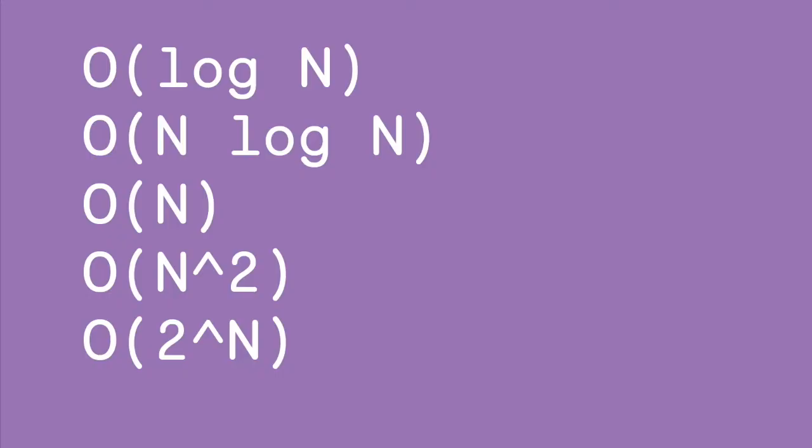So right off the bat, there's an analogy we're going to skip. The first thing we're going to talk about is Big O time complexity. Big O measures time, and there's also Big O for space. There are many runtimes for Big O, and the most common ones are O(log N), O(N log N), O(N), O(N²), and O(2^N).